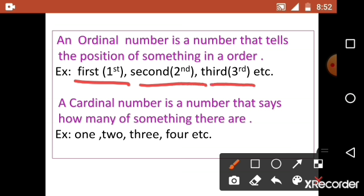A cardinal number is a number that says how many of something there are. Example: one, two, three, four, etc.